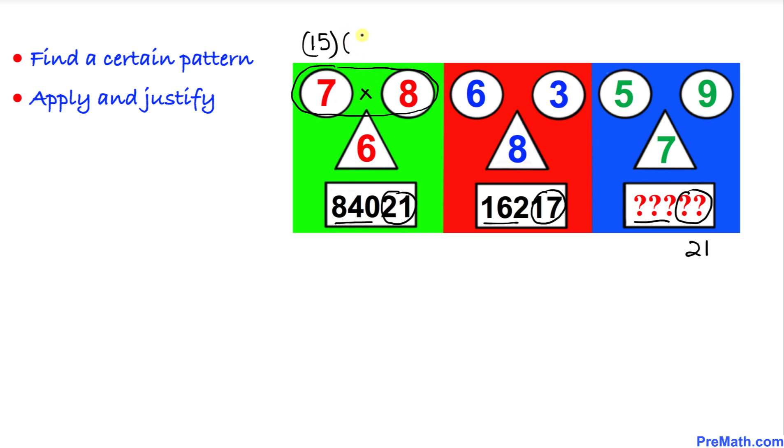And if we multiply these two numbers, that is going to give us 840, where we can see this 840. Let's apply the same philosophy to these next two numbers, 6 and 3.